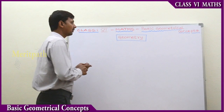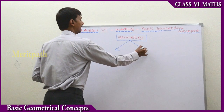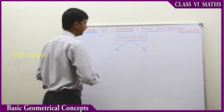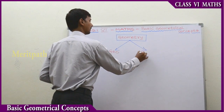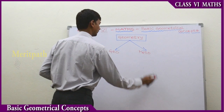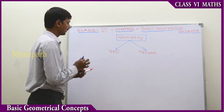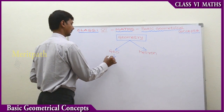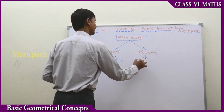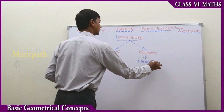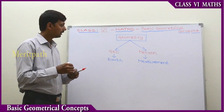Geometry is derived from the Greek words Geo and Metron. Geo means Earth and Metron means measurement.